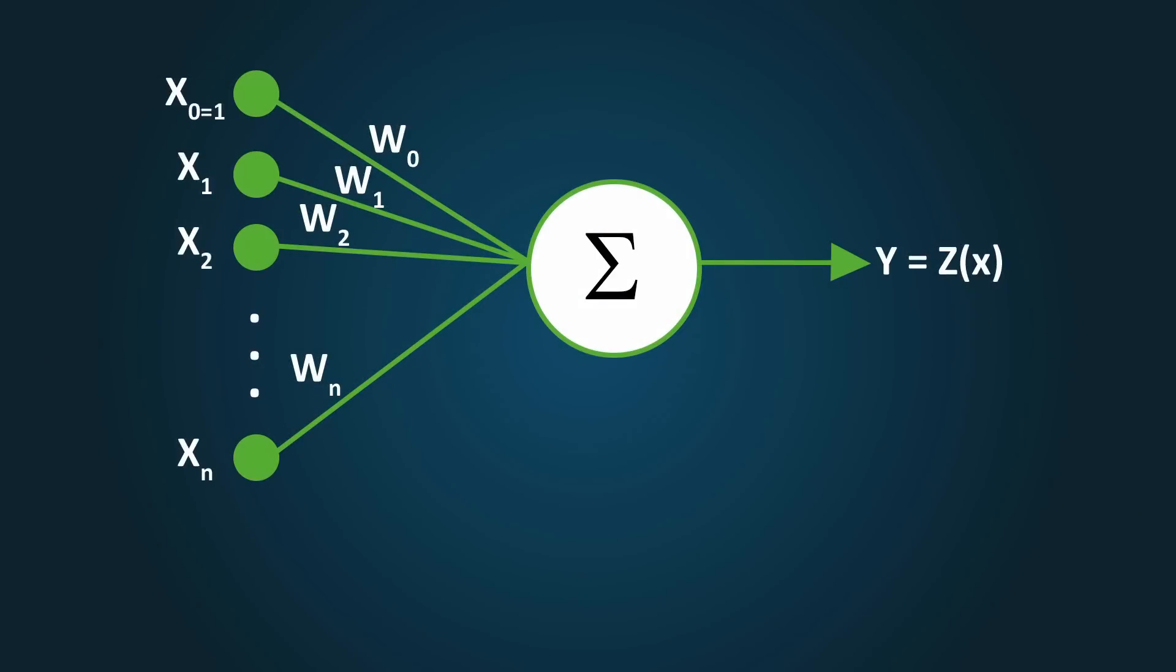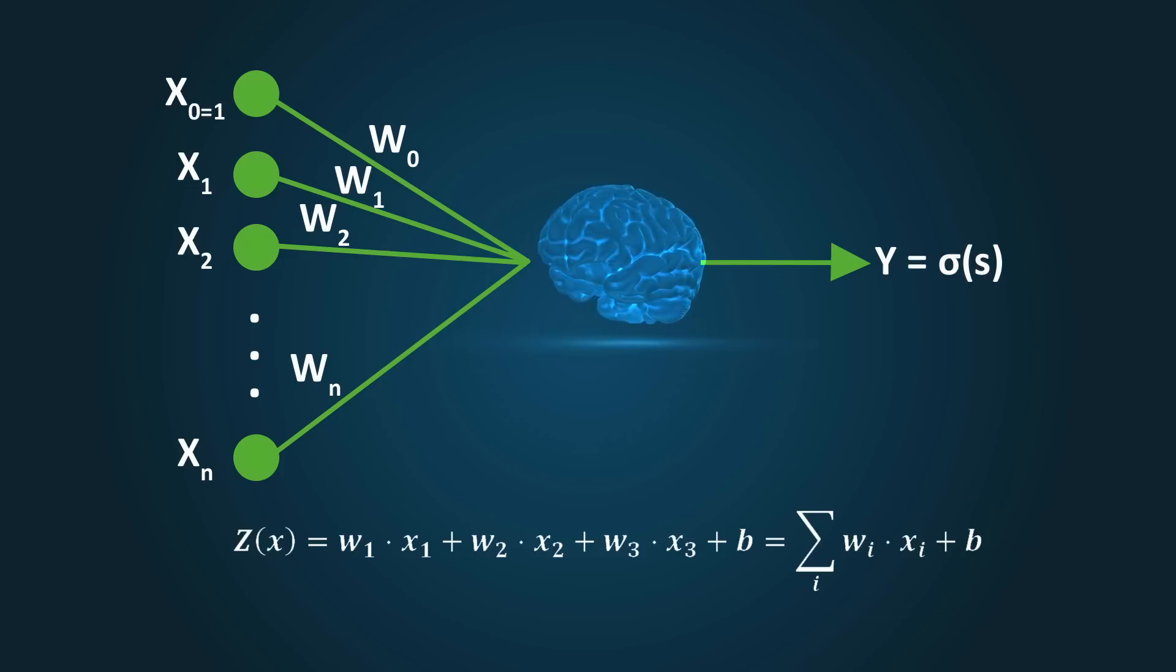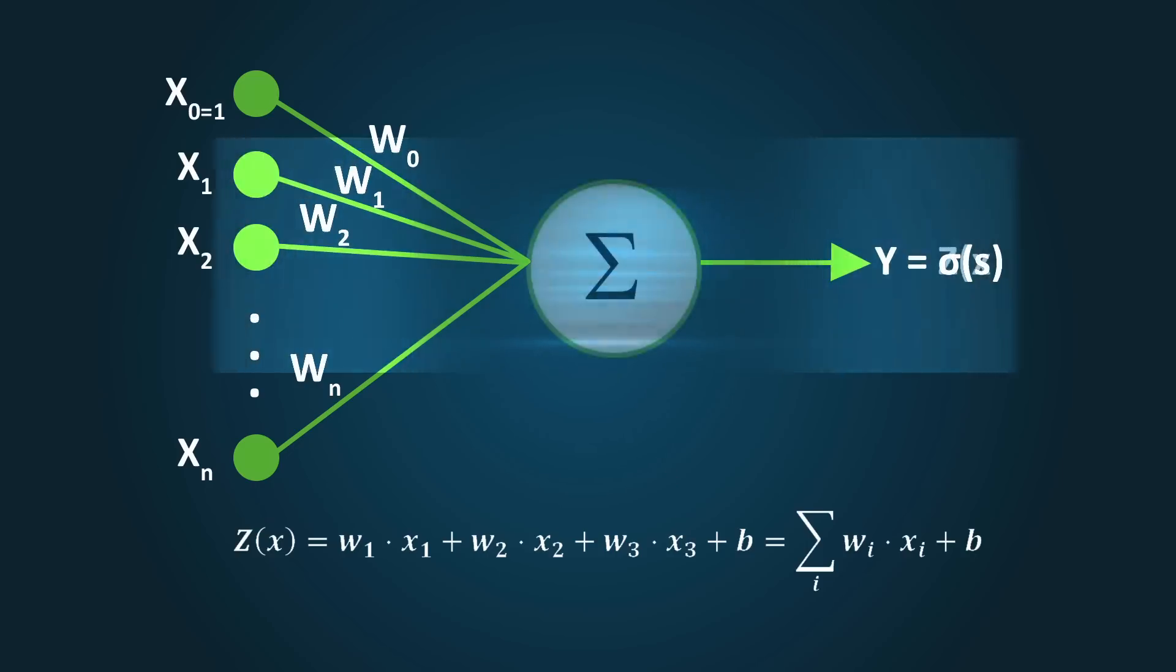Note that when we have multiple inputs, the function z representing the neuron is modified to be a sum like this. If you think about how our mind works, we sort of do this same thing. We take in all the inputs and we process this with the math that we have learned and numbers we understand. With this, we can figure out what we can afford and what we can't. Essentially, this is what a neural network can do too, but just in a more explicit way using purely mathematics.